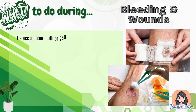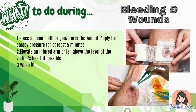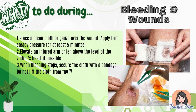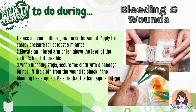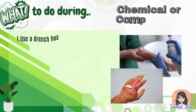Six, if the victim vomits, roll them on their side and keep the windpipe clear. What to do during bleeding and wounds: one, place a clean cloth or gauze over the wound and apply firm, steady pressure for at least five minutes; two, elevate an injured arm or leg above the level of the heart if possible; three, when bleeding stops, secure the cloth with a bandage; four, check the victim for shock; five, use tourniquets only when you cannot control the bleeding.